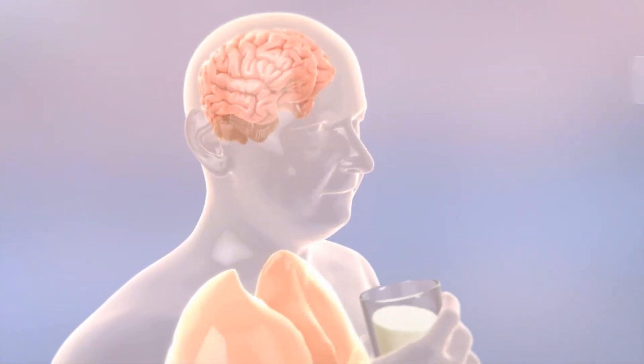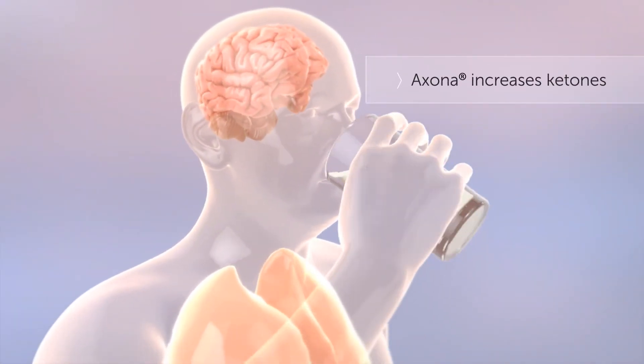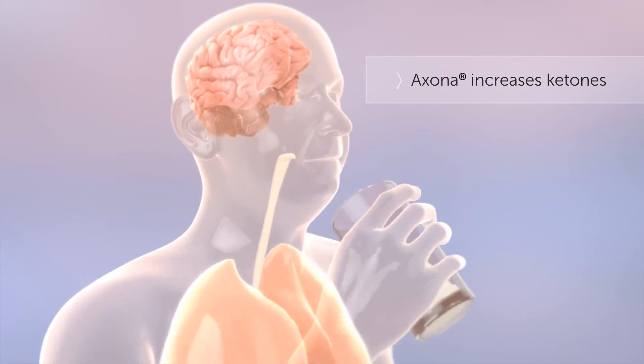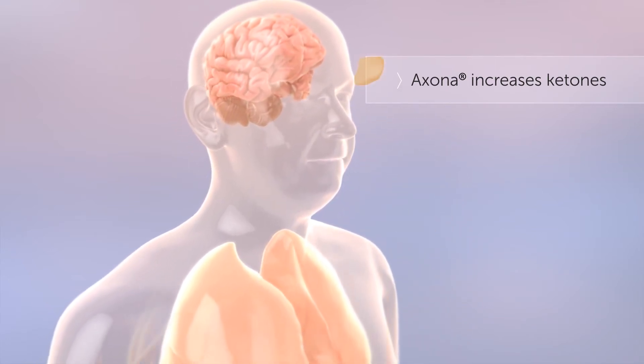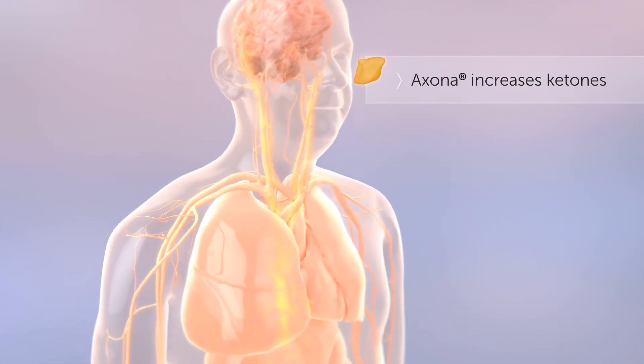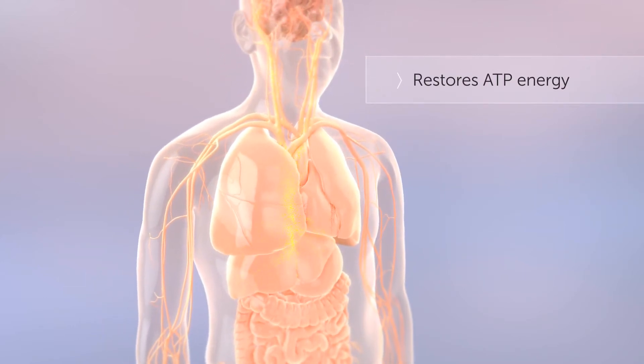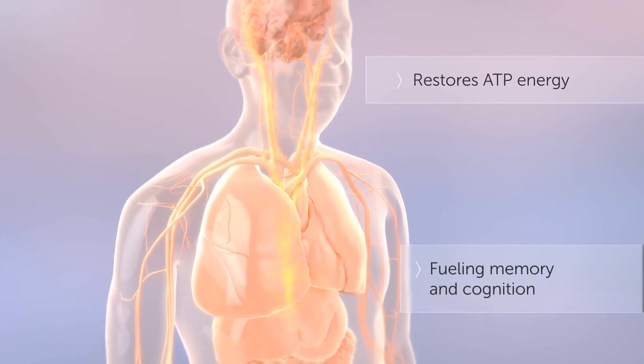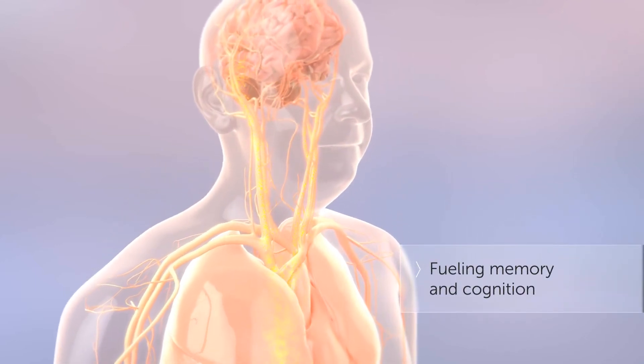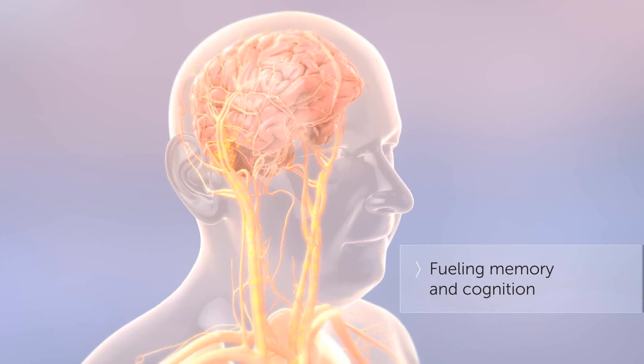AXONA is a prescription medical food intended for the clinical dietary management of Alzheimer's disease that safely increases the concentration of ketones in the blood. Ketones produced from AXONA travel to the brain, where they help restore the supply of ATP, fueling memory and cognition in patients with mild to moderate Alzheimer's disease.